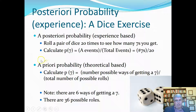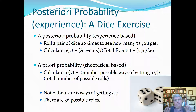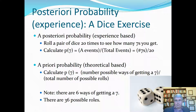The a priori probability of getting a 7 with two dice: we calculate the number of ways to get 7, then divide by the total possible rolls. There are 6 ways to get a 7: 1+6, 2+5, 3+4, 4+3, 5+2, and 6+1. The total possible rolls are 6 times 6 equals 36. So the a priori probability is 6 divided by 36, which is 1 out of 6, or about 13-14%.